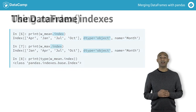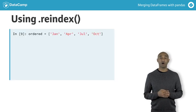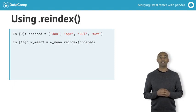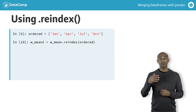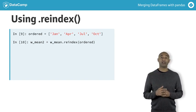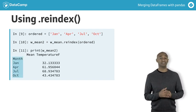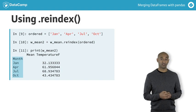We can define a list called ordered to impose a deliberate ordering on the index labels of W_mean. The data frame reindex method creates a new data frame, W_mean_2, with the same data as W_mean but with a new row ordering according to the input list ordered. We can see that W_mean_2 has the desired chronological ordering.